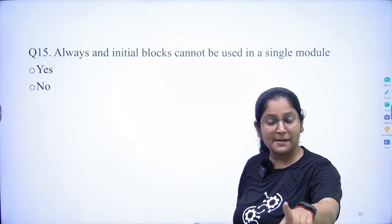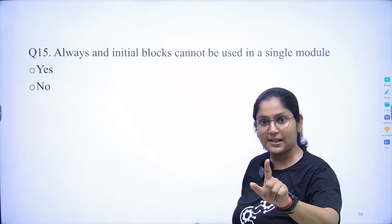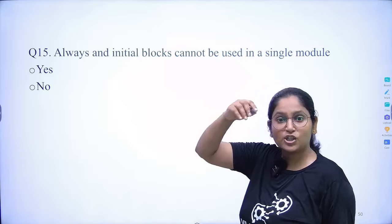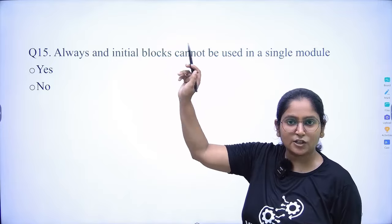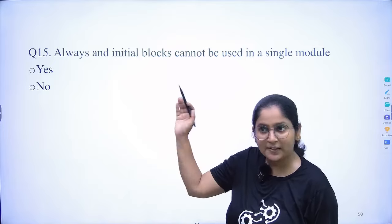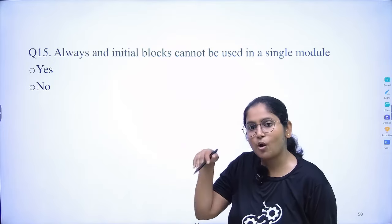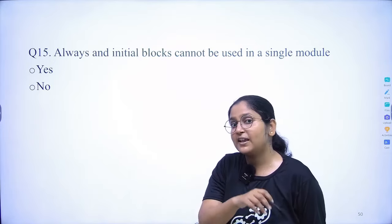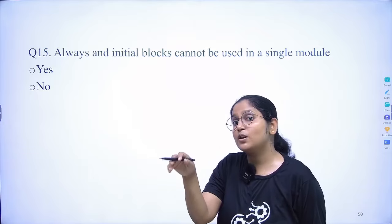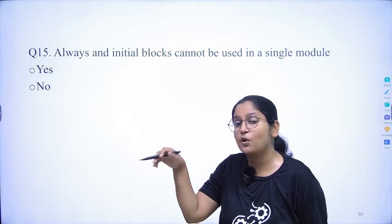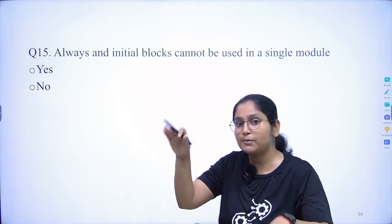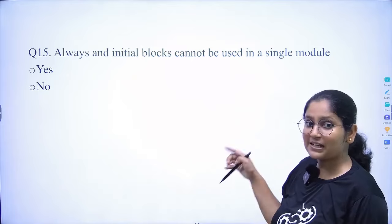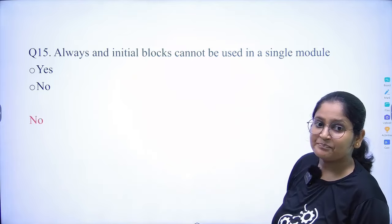Can always and initial blocks be used together in a single module? Yes — in the clock generator example we used initial to set clock to zero, and always to invert the clock every half-period, producing clock pulses. Both blocks were used together in that module.